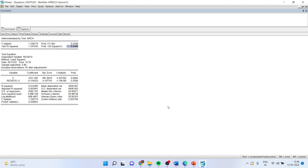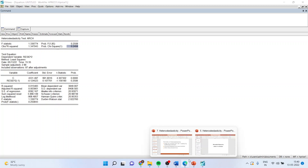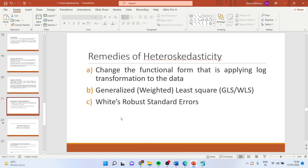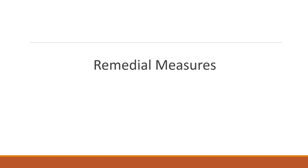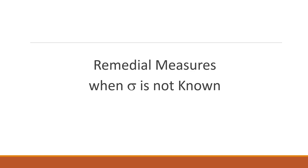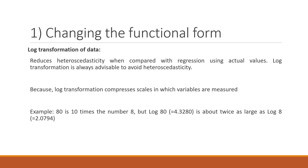To handle heteroscedasticity, we require some remedial measures. First is to change the functional form by applying a log transformation to the data. Second is Generalized Least Squares (GLS). Third is the White robust standard error. The choice of remedial measure completely depends on whether sigma is known or unknown. When sigma is not known, we apply the log transformation of the data.